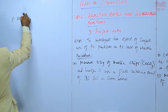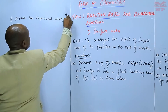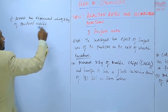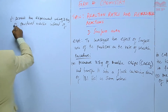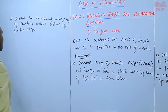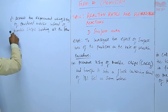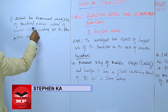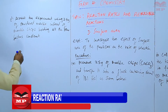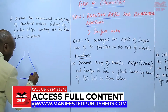We repeat the experiment using 2.5 grams of powdered marble instead of marble chips. We repeat without using chips, but use the powdered marble in finer particles, holding all other factors constant. Our setup will be similar to the previous one, except that we use powdered marble instead of marble chips.